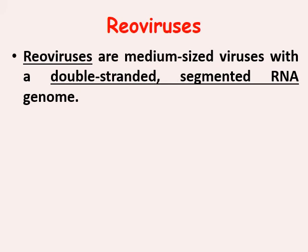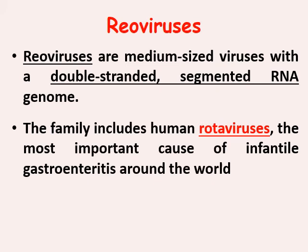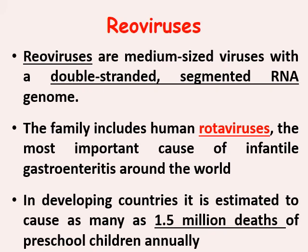The most important group is Rheoviruses. Rheoviruses are double-stranded segmented RNA viruses. We should know that double-stranded RNA viruses are very few in medical importance, and this is one of them. The family includes human rotaviruses, which are the most important cause of infantile gastroenteritis around the world. In developing countries, it is estimated to cause as many as 1.5 million deaths of preschool children annually, so it is a deadly disease especially in developing countries.